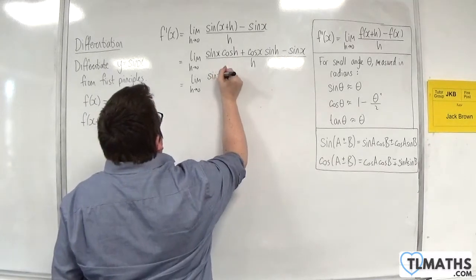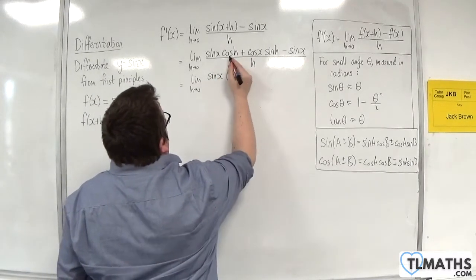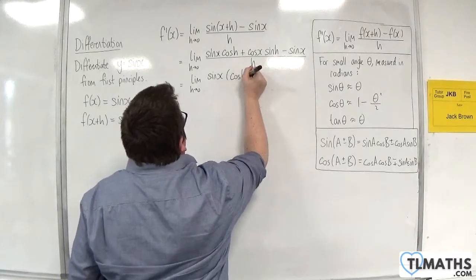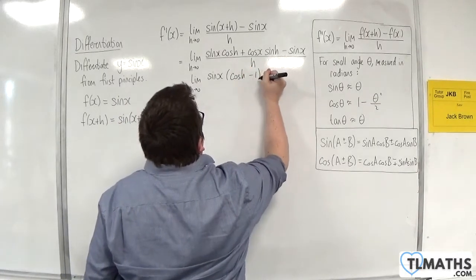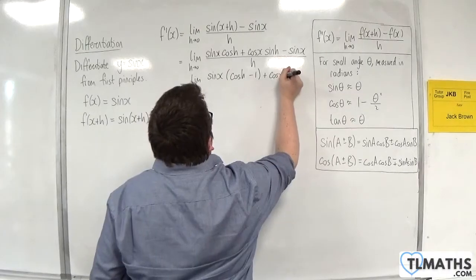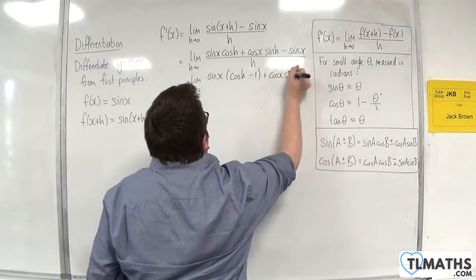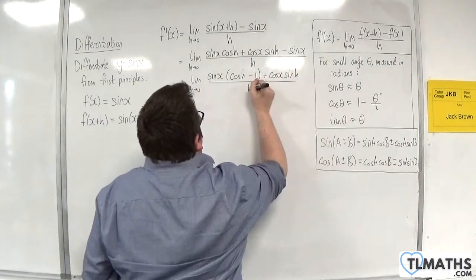So I'm going to factor out the sin x from a bracket, and I'll have cos of h take away one inside the bracket plus cos x sin of h, all divided by h.